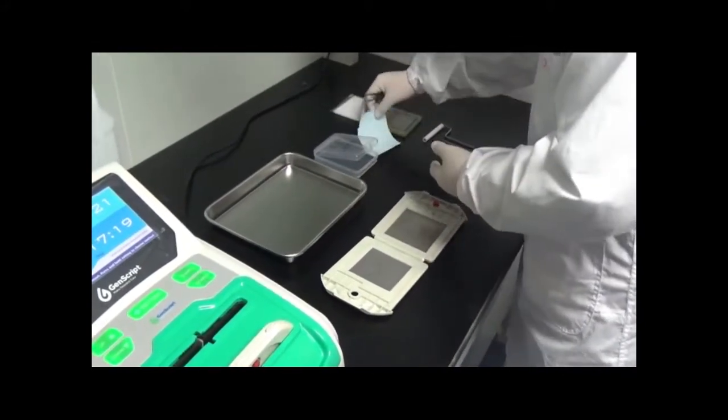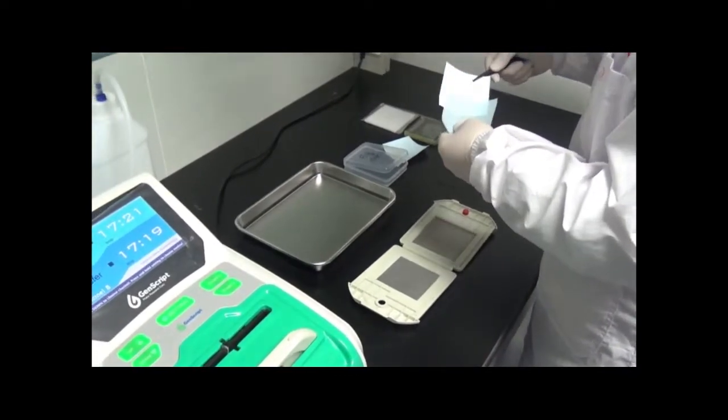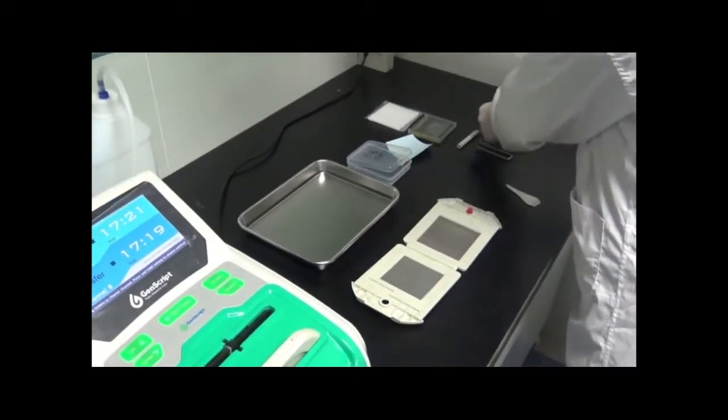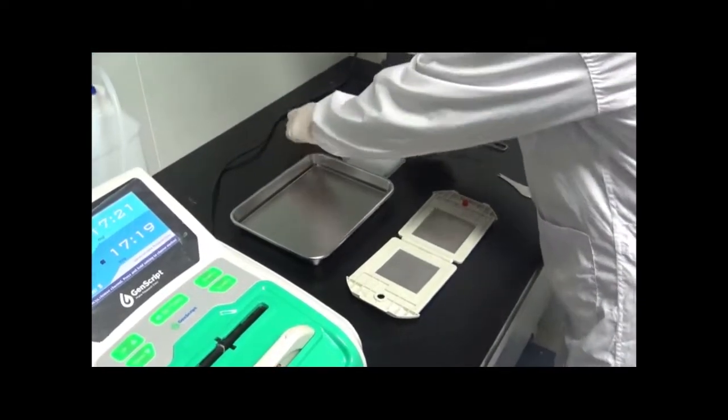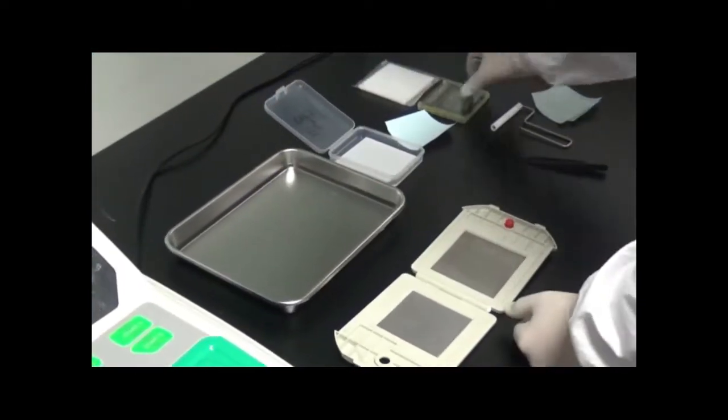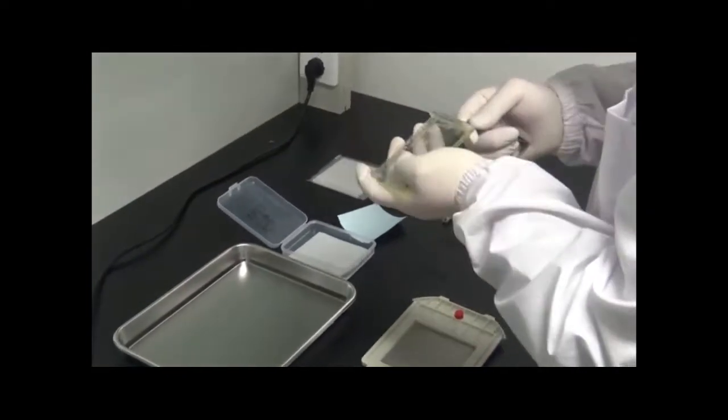Remove the nitrocellulose membrane and place it into a tray containing the 1X nitrocellulose equilibration buffer. Remember, if you are using PVDF, make sure to wet the membrane in isopropanol first and then place it into the PVDF equilibration buffer.